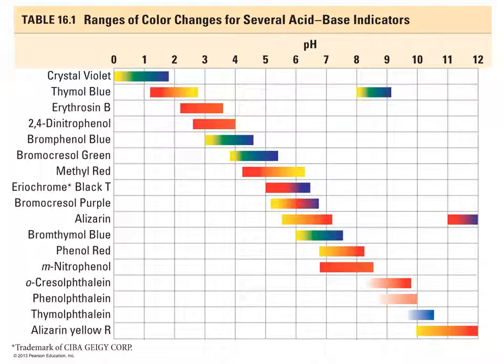Universal indicators are a mixture of several of these indicators, so they'll be different colors for different pHs. There's a couple of ways we can use indicators. By looking for the intermediate color, we can determine the pH of a compound, something we won't do in lab.